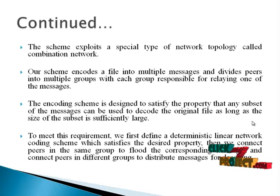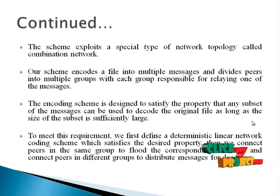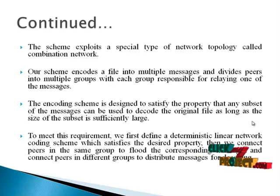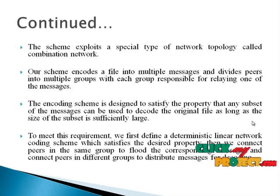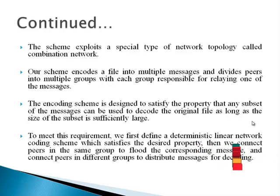The scheme encodes a file into multiple messages and divides peers into multiple groups, with each group responsible for relaying one of the messages. When a client requests a message, it finds which group has the message, encodes it, locates the corresponding file, and delivers it to the user. The encoding scheme is designed so that any subset of messages can be used to decode the original file, as long as the subset size is sufficiently large. A deterministic linear network coding scheme is defined to satisfy this property, connecting peers in the same group to share the encoding message and peers in different groups to distribute messages for decoding.